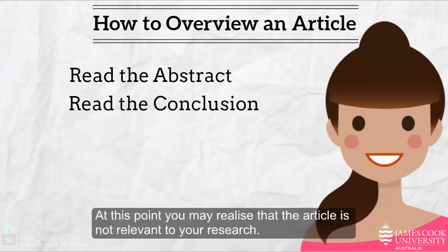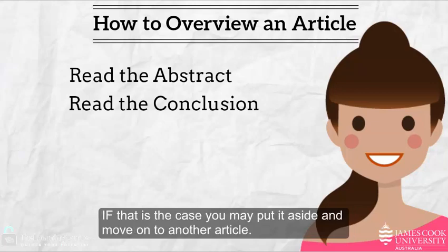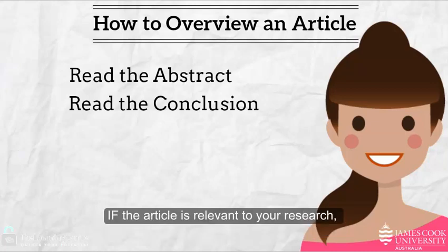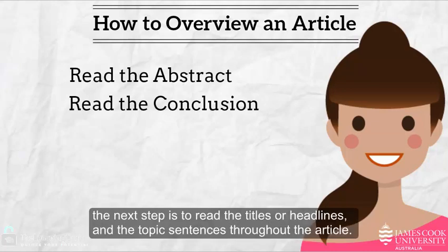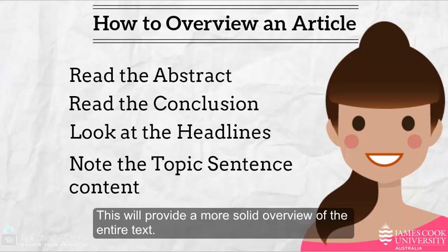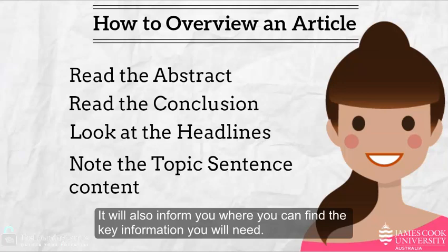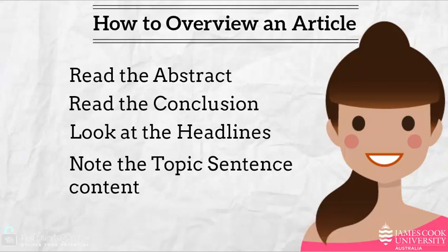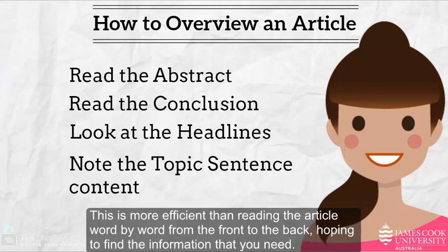At this point, you may realize that the article is not relevant to your research. If that is the case, you may put it aside and move on to another article. If the article is relevant, the next step is to read the titles or headlines and the topic sentences throughout the article. This will provide a more solid overview of the entire text and inform you where you can find the key information you will need — more efficient than reading word by word from front to back.